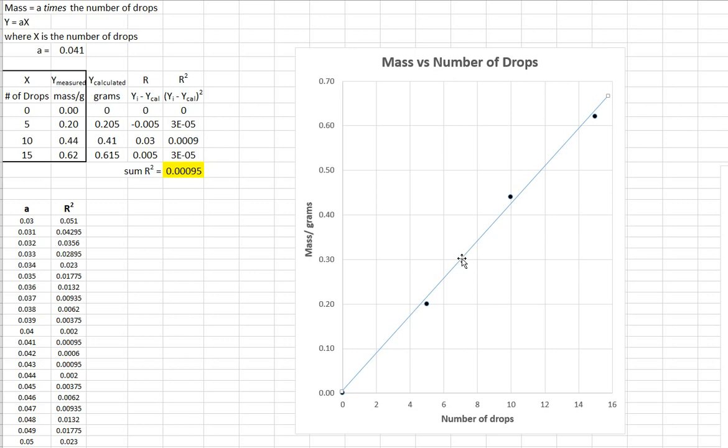So the question is, how do you find the best line? And the best line is the one that makes the sum of the squares of the distance between the point and the line a minimum.